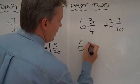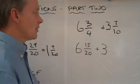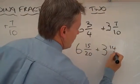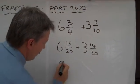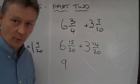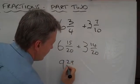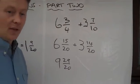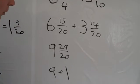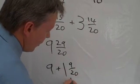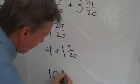So it becomes 6 and 15 twentieths plus 3 whole ones and 14 twentieths. I'm going to add the 2 together. 6 and 3 is 9. We know that. We've added the whole ones together. 15 twentieths and 14 twentieths is 29 twentieths. So what we've got now is 9 whole ones plus 1 whole one and 9 twentieths. So 9 add 1 is 10. 9 twentieths left over.